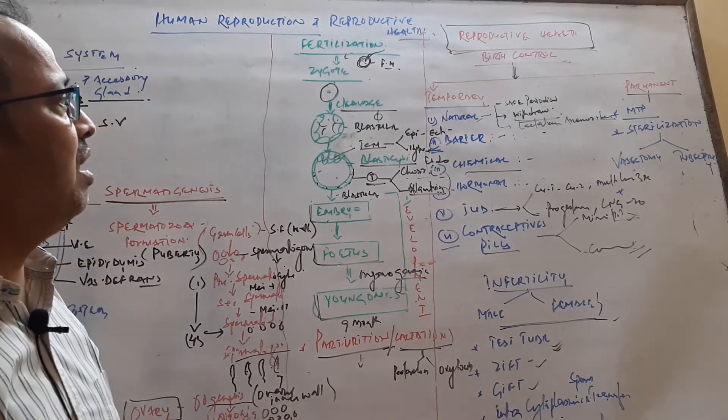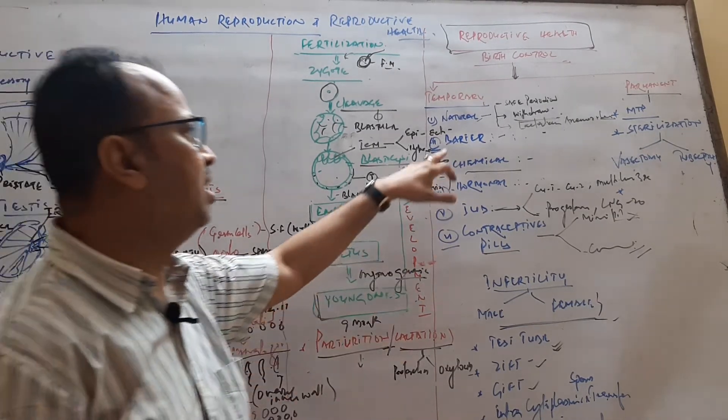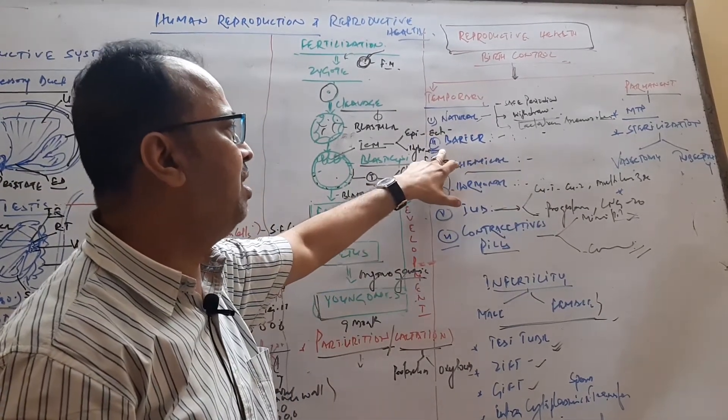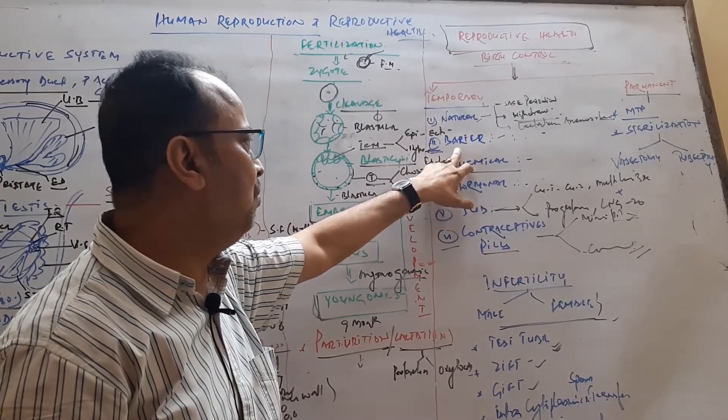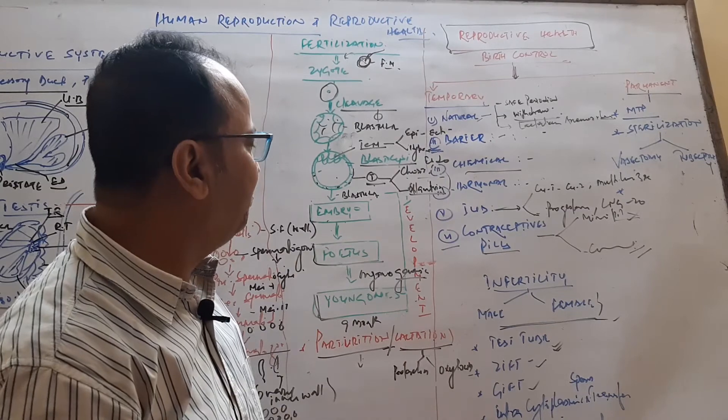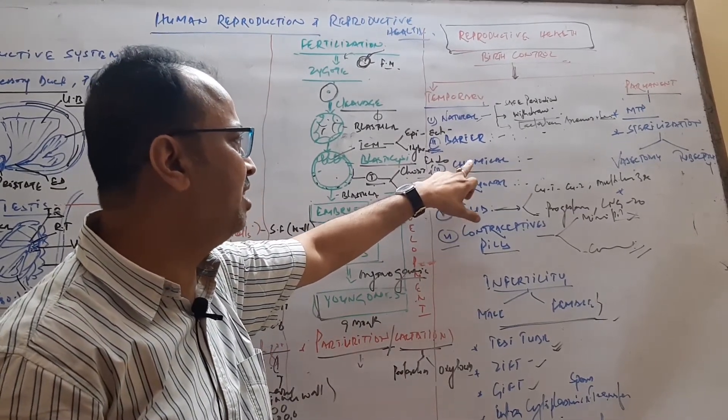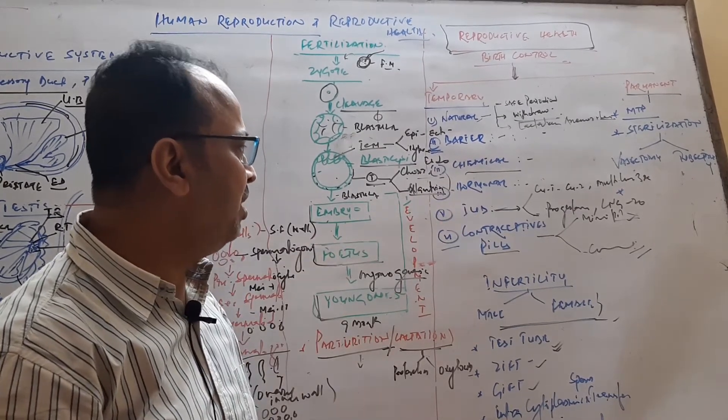Now reproductive health. It is the wellbeing of the reproductive system. Birth control can be temporary. There are natural birth control methods: safe period, withdrawal period, and lactational amenorrhea. Barrier methods include use of condoms, male and female condoms, cervical vault, and vaginal vault. Chemical methods include few chemicals like boric acid, citric acid, and gels.